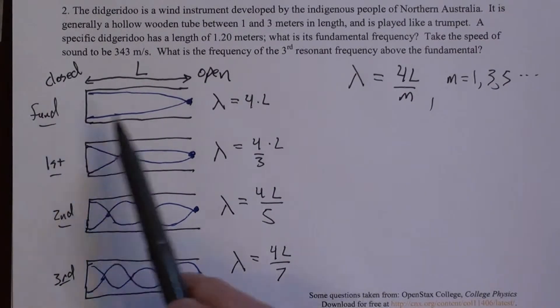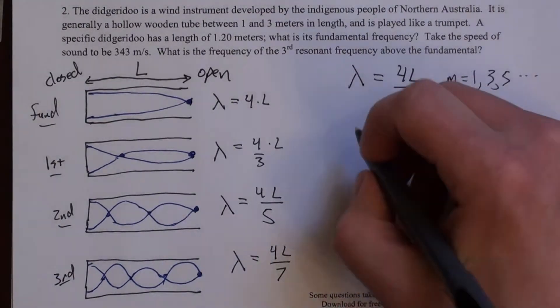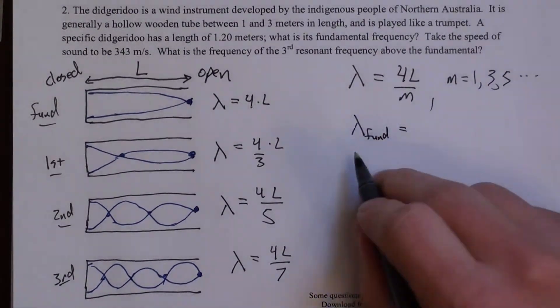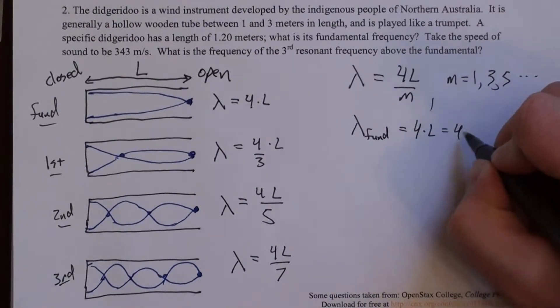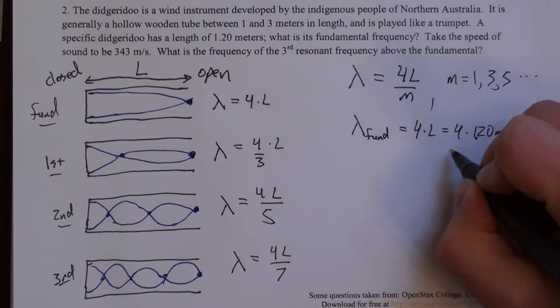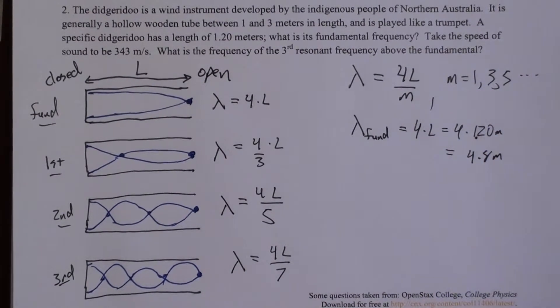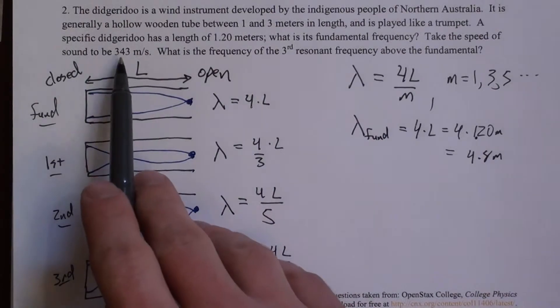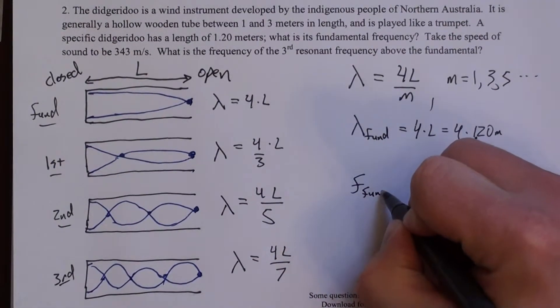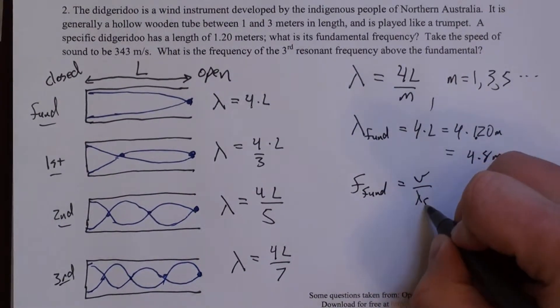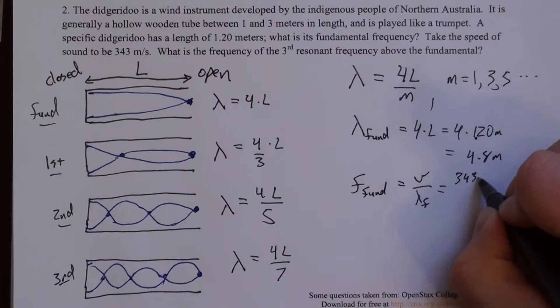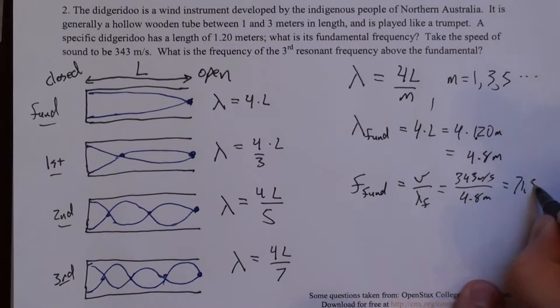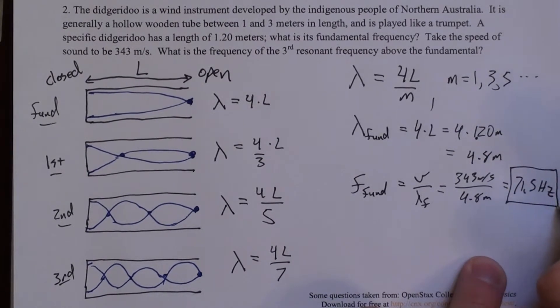So if we're just looking for the fundamental, we already found it. The wavelength is four L, so lambda fundamental equals four L, which is four times 1.2 meters, which is 4.8 meters. We're not looking for lambda, we're looking for frequency, and we relate those things by the wave speed, which is given to us here. So F fundamental looks like V over lambda fundamental, and what we have is 343 meters per second divided by 4.8 meters, and that is 71.5 hertz. So that's the fundamental frequency. It's pretty low, but this is a very long instrument.